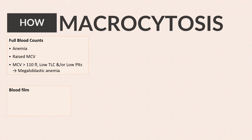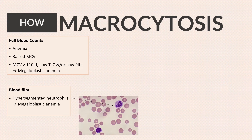Blood film microscopy may show hypersegmented neutrophils in B12 and folate deficiency, and target cells if liver disease is the cause of macrocytosis.